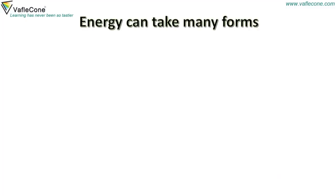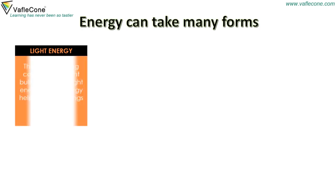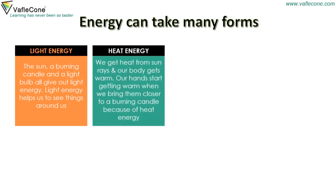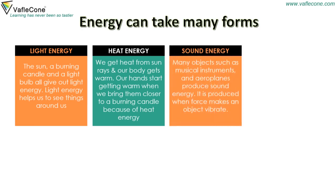Light energy: the sun, a burning candle, and a light bulb all give out light energy. Light energy helps us to see things around us. Heat energy: we get heat from sun rays and our body gets warm. Our hands start getting warm when we bring them closer to a burning candle because of heat energy. Sound energy: many objects such as musical instruments and aeroplanes produce sound energy. It is produced when force makes an object vibrate.